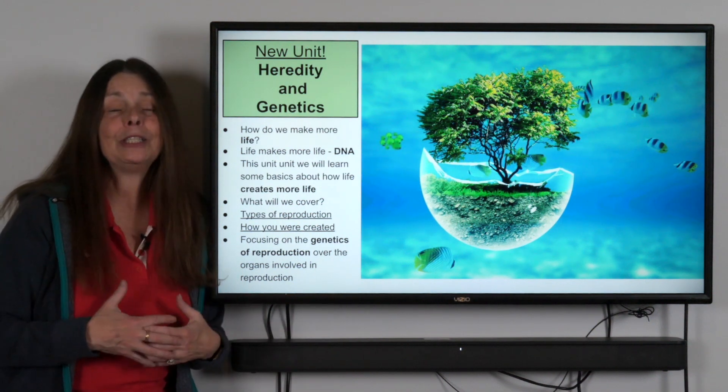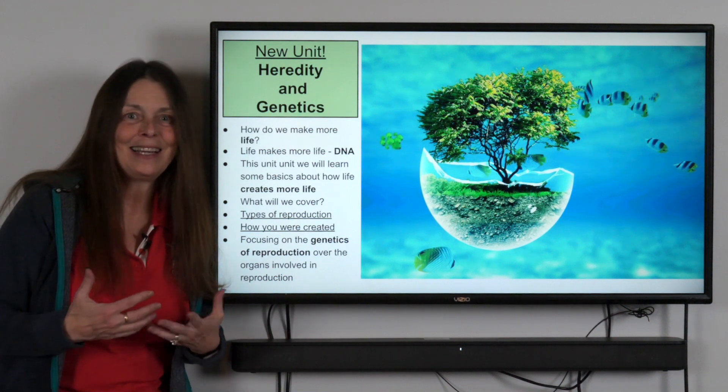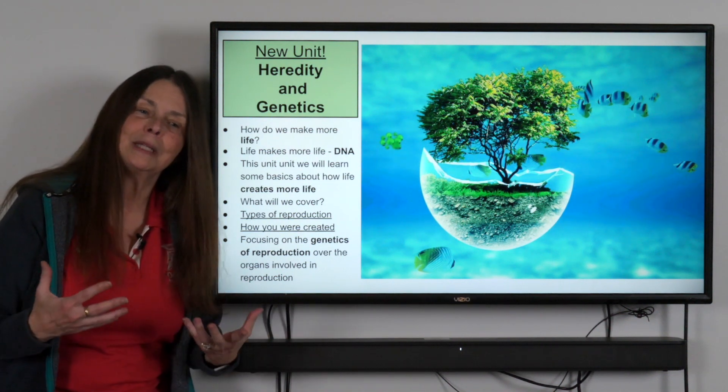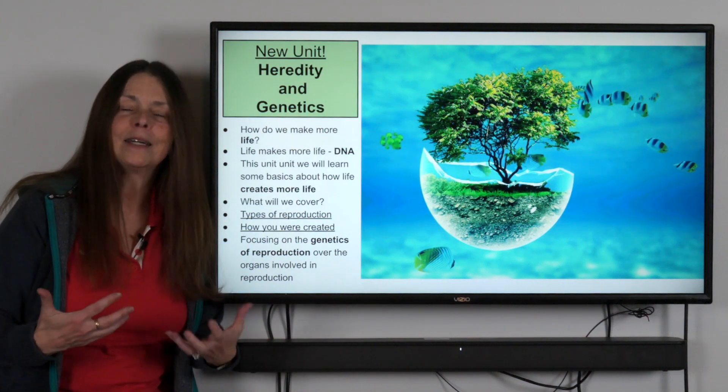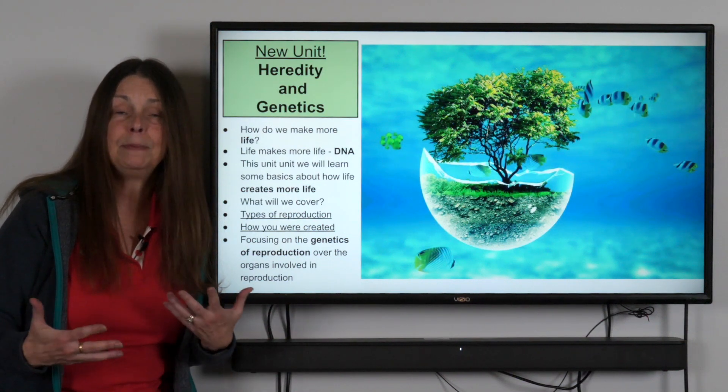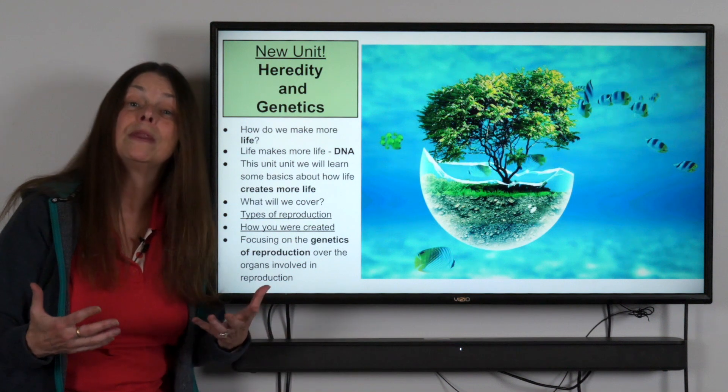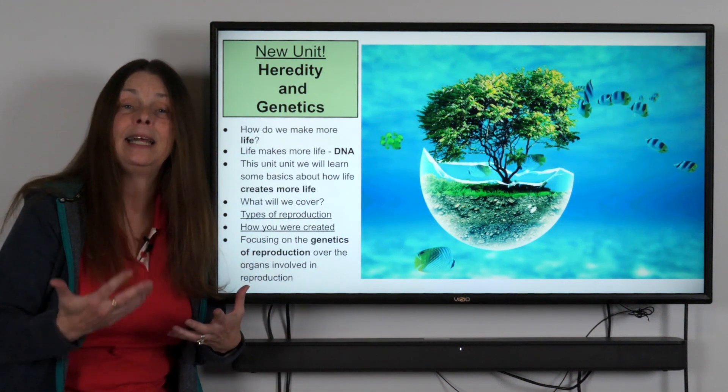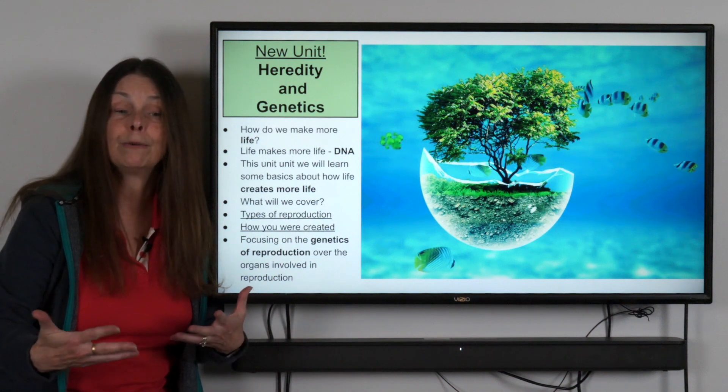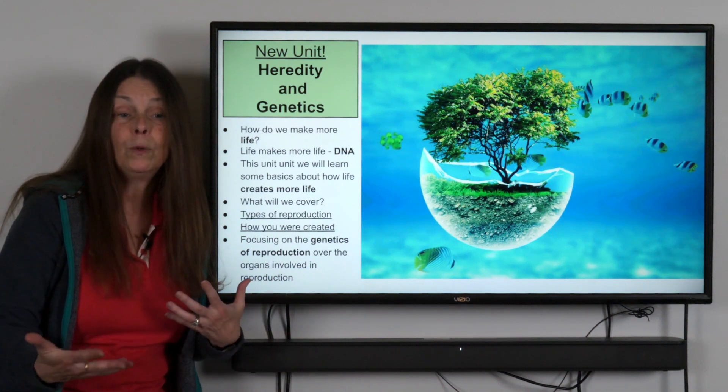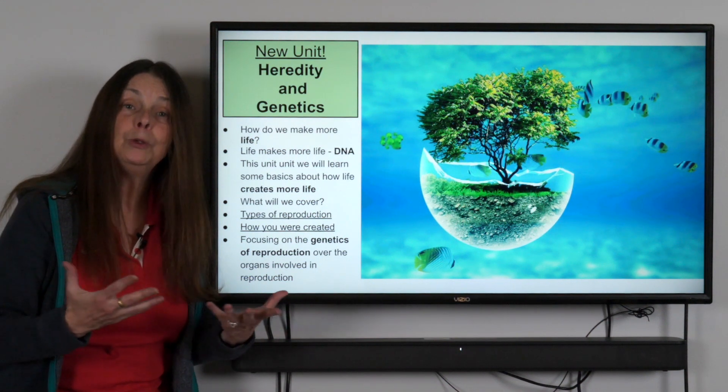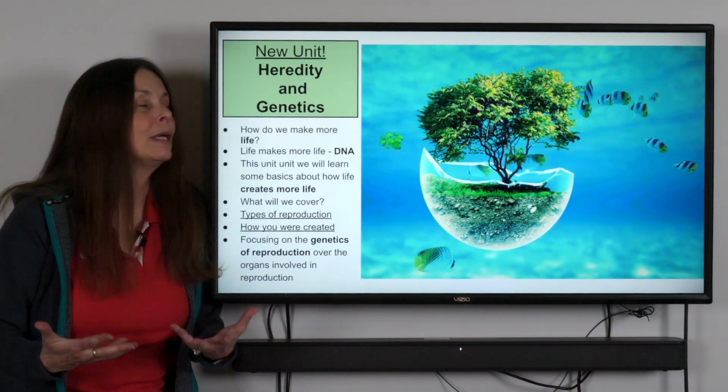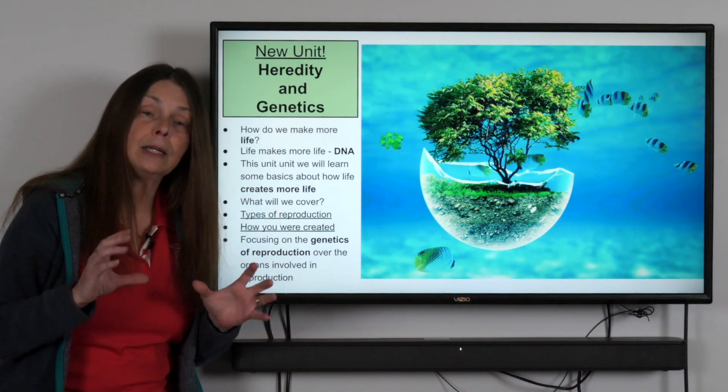This one on heredity and genetics really gets into the concept of who are we and where we came from. We're going to start with the concept of life has to come from other life, and depending on the species you are that may look different, but one thing they all have in common is the idea that we have to pass DNA on to the next generation. What that's really for is to give a blueprint or an instruction manual of how to create that organism.